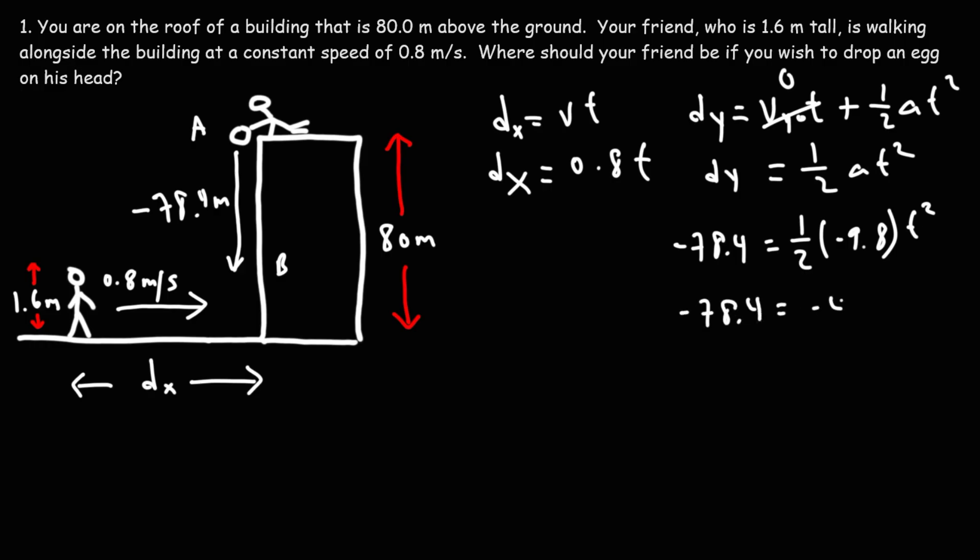Half of 9.8 is 4.9. So now, let's divide both sides by negative 4.9. 78.4 divided by 4.9 is 16. And the two negative signs will cancel. So we get positive 16. And that's equal to t squared.